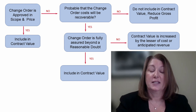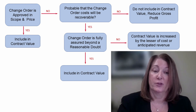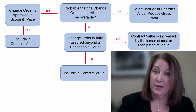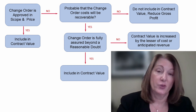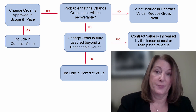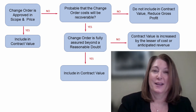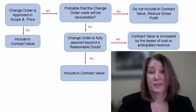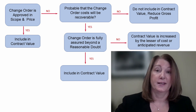You're going to need to determine if the approval of the change order is assured beyond a reasonable doubt. If the answer is no — it's not totally assured beyond a reasonable doubt — you're going to take the lower of cost or anticipated revenue. In the case of cost, that means you're going to recognize zero gross profit. In the case where the anticipated revenue is less than cost, you're in essence recognizing the loss at this point in time.